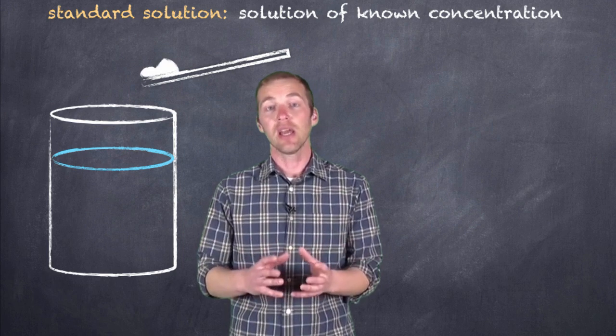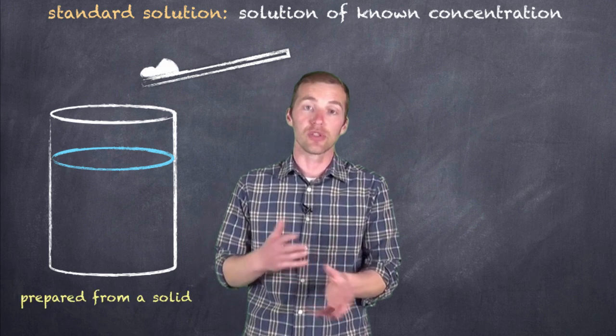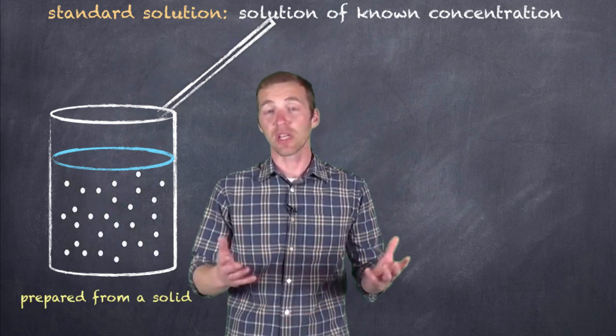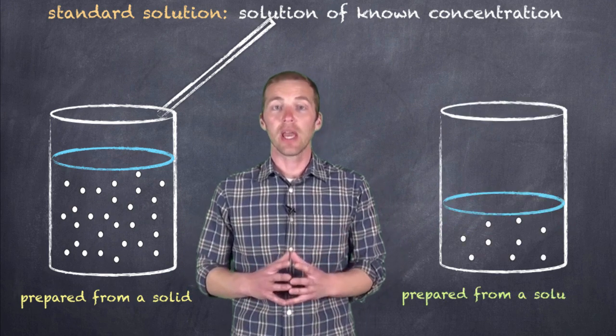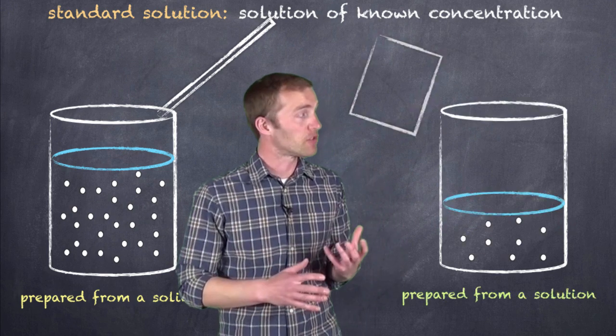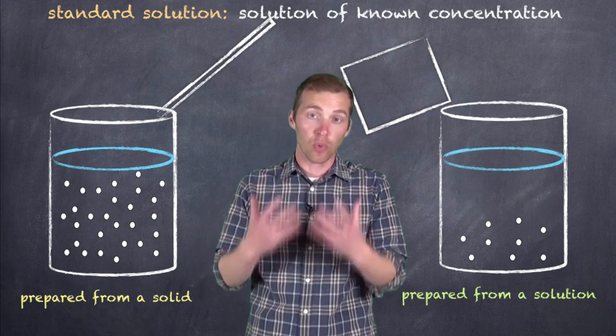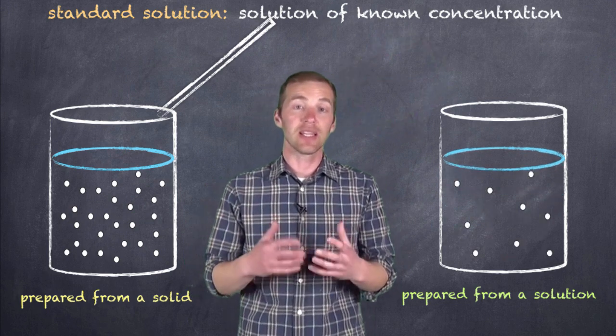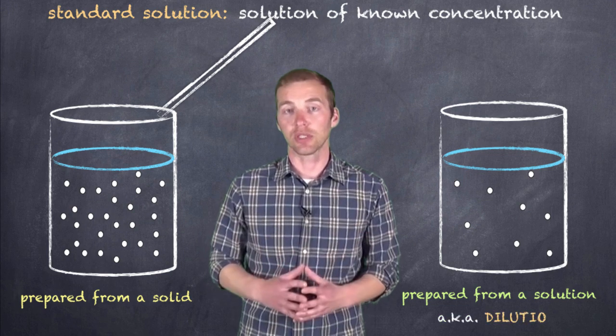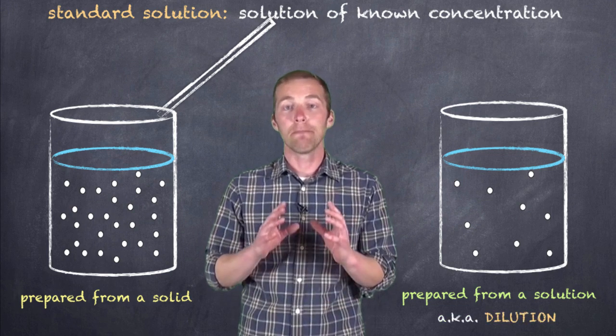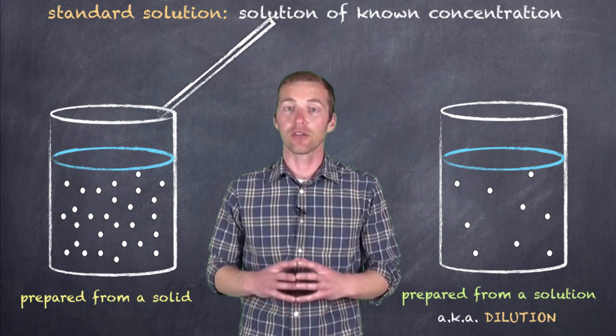One is from a solid. That is, we can take a known solute and dissolve it in a certain amount of solvent, in most cases water, to prepare our standard solution. Or we can take a solution of known concentration and add more solvent to it to create a less concentrated solution. This is a process that we refer to as a dilution. And we're going to take a look at both methods of preparing a standard solution.